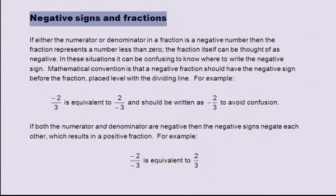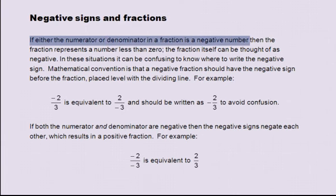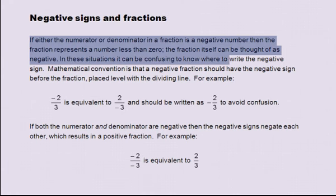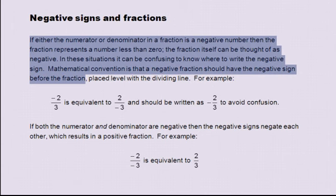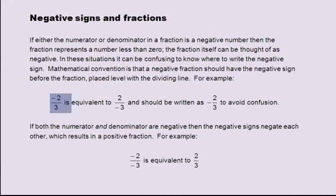Negative signs and fractions. If either the numerator or denominator in a fraction is a negative number, then the fraction represents a number less than zero, and the fraction itself can be thought of as negative. In these situations, it can be confusing to know where to write the negative sign. Mathematical convention is that a negative fraction should have the negative sign before the fraction, placed level with the dividing line. For example, minus two over three is equivalent to two over minus three, and should be written as minus two over three to avoid confusion.